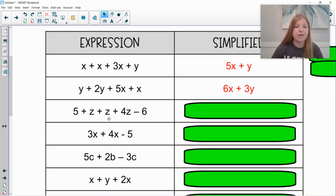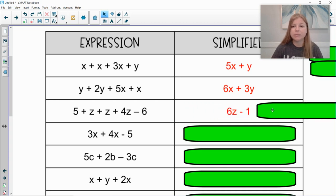The next one. If I look at these terms, I see I have three terms with z's in them. 1z plus 1z plus 4z. That would give me 6z. And then 5 minus 6. Well, 5 minus 6 is negative 1. So this would then be 6z minus 1.